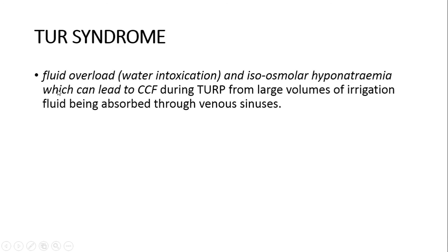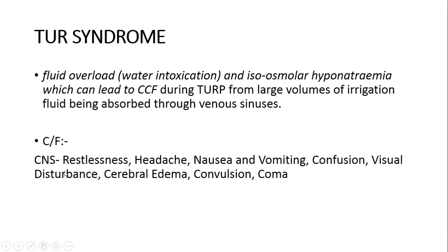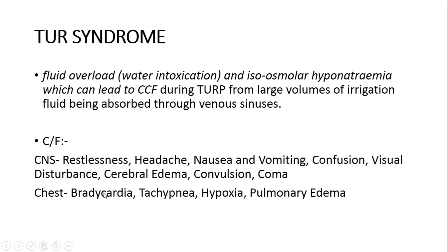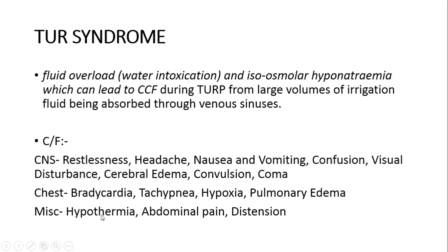TURP syndrome is fluid overload and isosmolar hyponatremia that can occur during TURP from a large volume of irrigation fluid being absorbed through the venous sinuses. Clinical features of TURP syndrome include CNS symptoms such as restlessness, headache, nausea and vomiting, confusion, visual disturbance, cerebral edema, convulsion and coma. Chest symptoms include bradycardia, tachypnea, hypoxia and pulmonary edema. Miscellaneous symptoms include hypothermia, abdominal pain and distension.